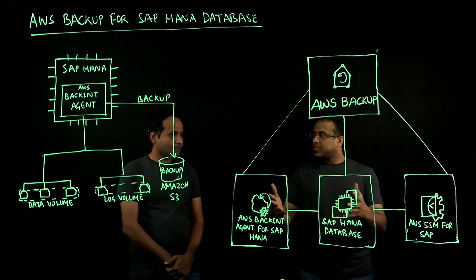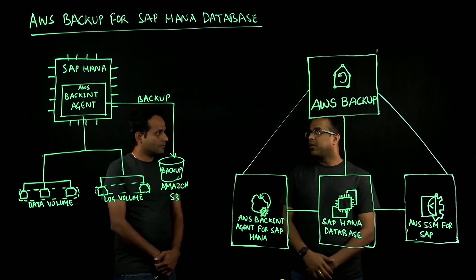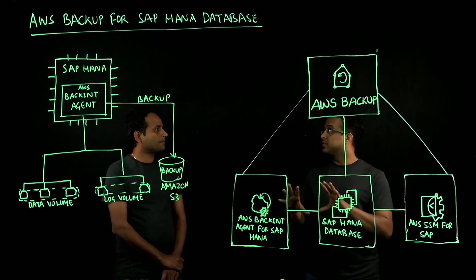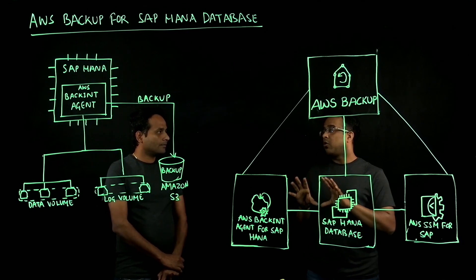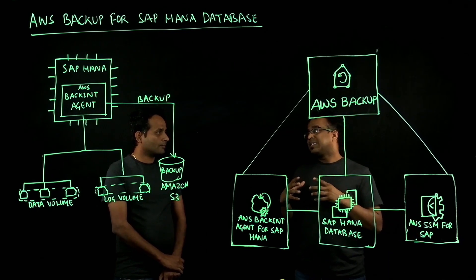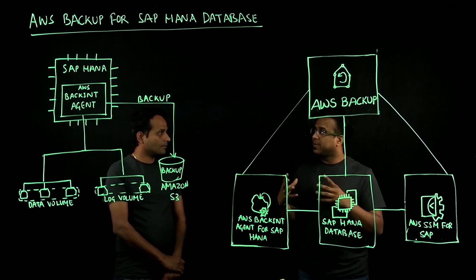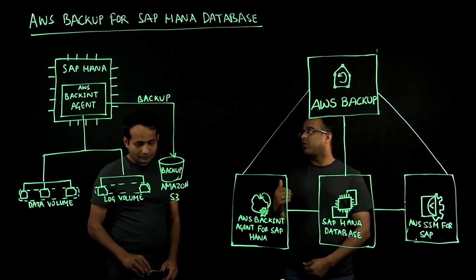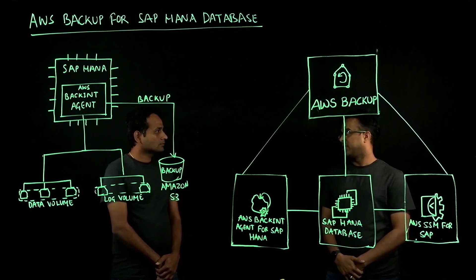As customers embark on their SAP and AWS journey, SAP workloads are critical, and the SAP HANA database is super critical. HANA is an in-memory database where all the transaction and master data of SAP systems reside. Since HANA is so critical, the backup of SAP HANA database is also very important. Srinath, talk to me about the different options and how customers can automate HANA database backup on AWS.